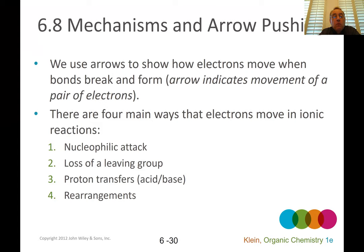So we use, we talked about how we use arrows to show electrons moving, pairs of electrons moving when bonds break, when bonds form. And there are four ways that electrons move in ionic reactions. We have a nucleophilic attack, loss of a leaving group, proton transfer, and rearrangements. And I'm going to talk about each of these in turn with examples.